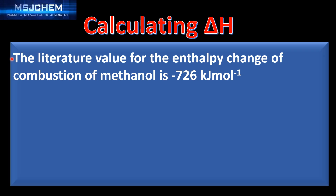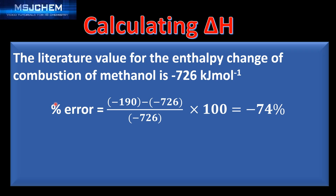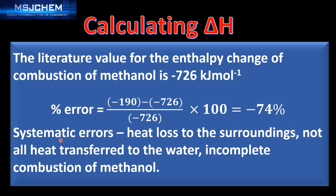The literature value for the enthalpy change of combustion of methanol is negative 726 kJ/mol. Calculating the percentage error gives negative 74%, meaning our experimental value was lower than the theoretical value. With such a high percentage error we must have systematic errors: heat loss to the surroundings, not all the heat being transferred to the water, and incomplete combustion of the methanol.